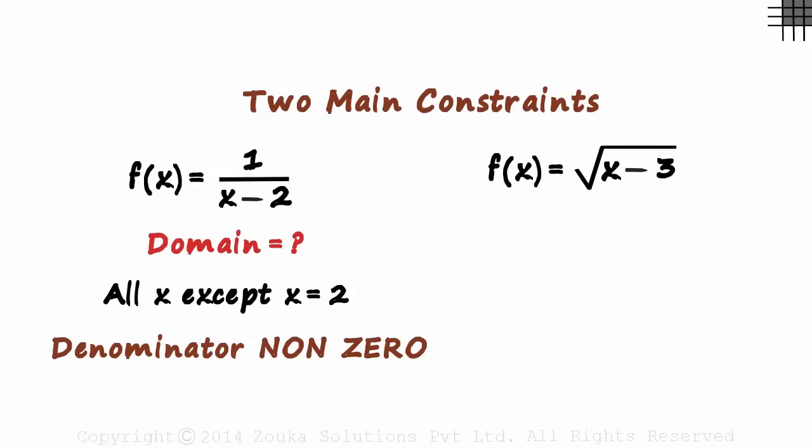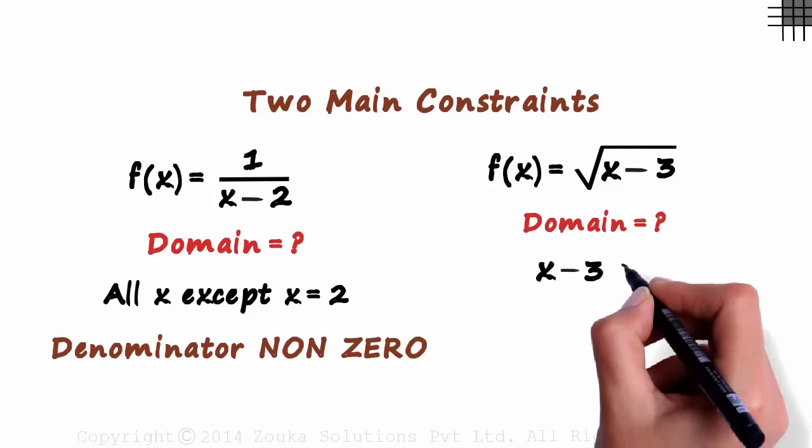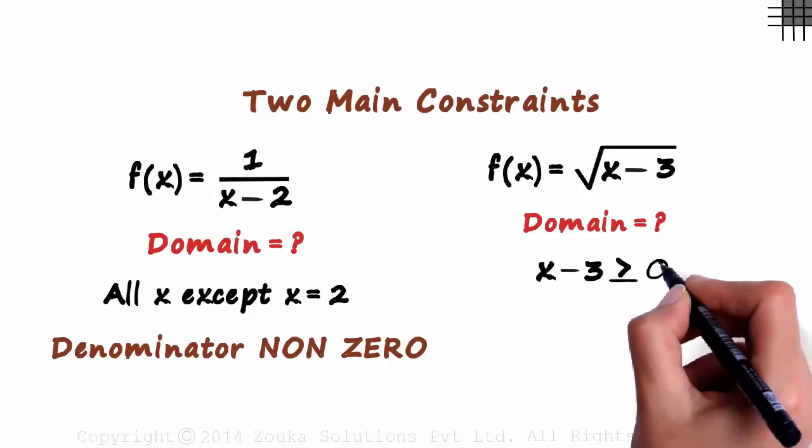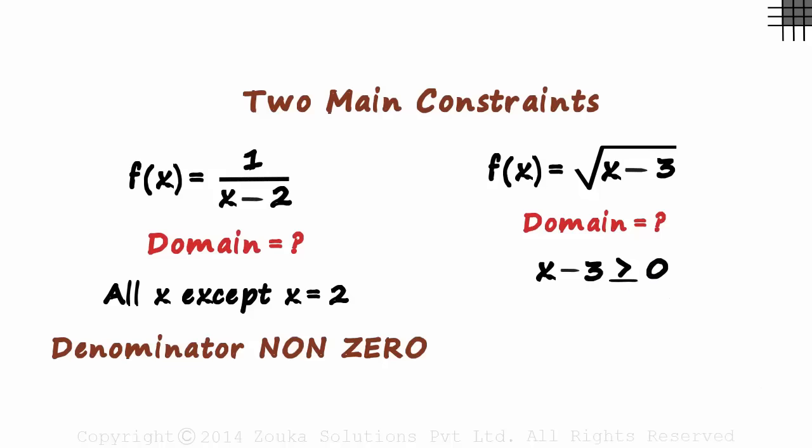Here's another one. What is the domain of this function? Can we have a negative number within the square root? Well, I don't think we can. So, x minus 3 will be greater than or equal to zero. This means, x has to be greater or equal to 3.